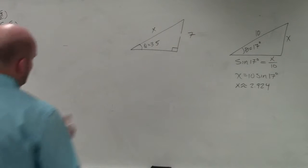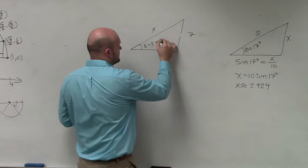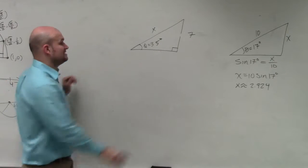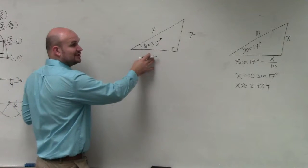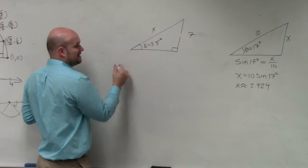So in this example, sorry about that guys, this is 35 degrees. All we simply need to do is identify which trigonometric function we need. We have the opposite and the hypotenuse.